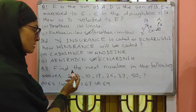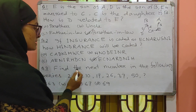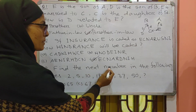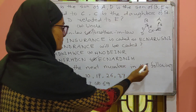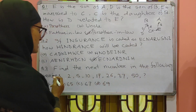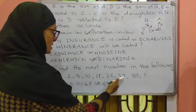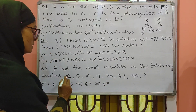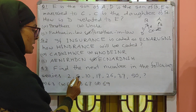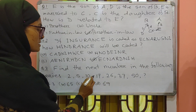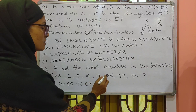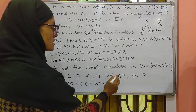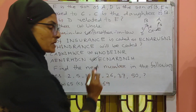Another question: Find the next number in the following series. The series is: 2, 5, 10, 17, 26, 37, 50.